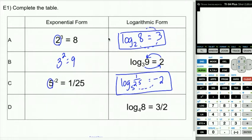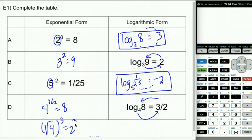And then our last one. We're rewriting log base 4 of 8 equals 3 halves. So we're going to do 4 to the 3 halves equals 8. You can check that if you want. That's the same thing as saying the square root of 4 to the third, which is 2 to the third, which is definitely an 8. So there you have it.